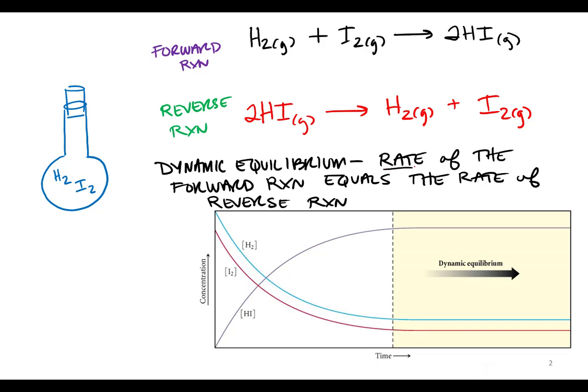Notice, though, that once dynamic equilibrium takes place, what happens to the concentrations of both reactants and products? They stay the same. So they've stopped changing. That doesn't mean the reaction is done. That's why we call it dynamic instead of static. Static means not changing. Dynamic means constantly changing.